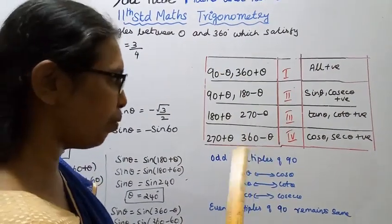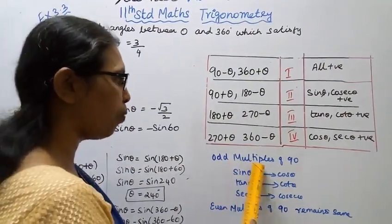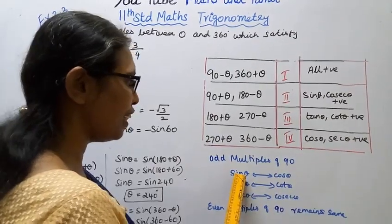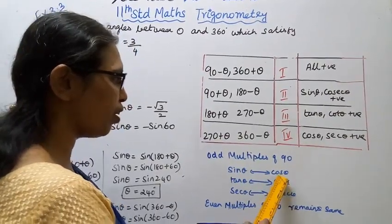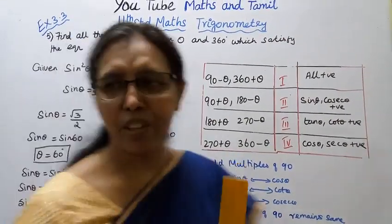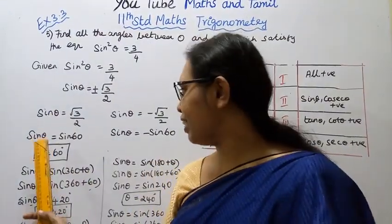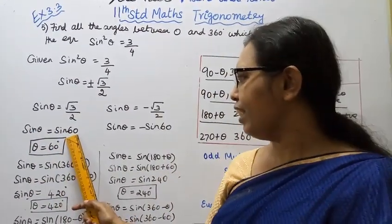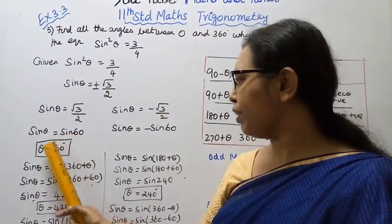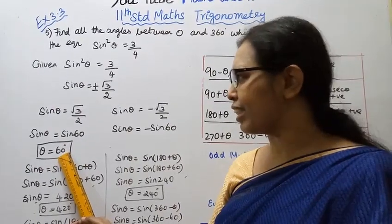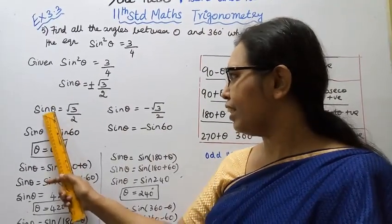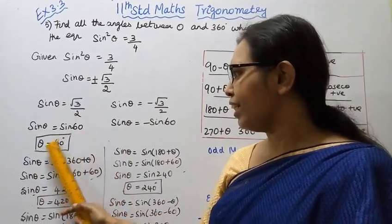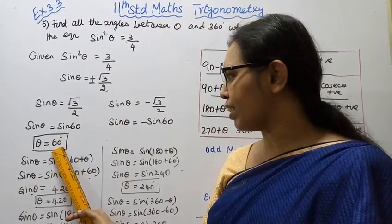We write the values for sin theta. Sin theta equal to root 3 by 2. Therefore sin theta equal to sin 60 degrees.